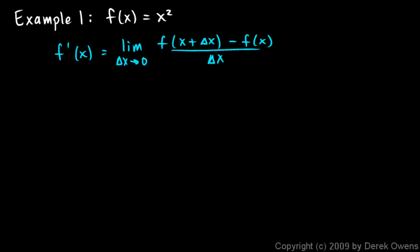So how do we do this? Well, this is going to be the limit as delta x approaches zero of f of x plus delta x. So f of this, I need to take x plus delta x and put it in here for x. So this is going to be x plus delta x squared. That is f of x plus delta x minus f of x, and f of x is just x squared over delta x.